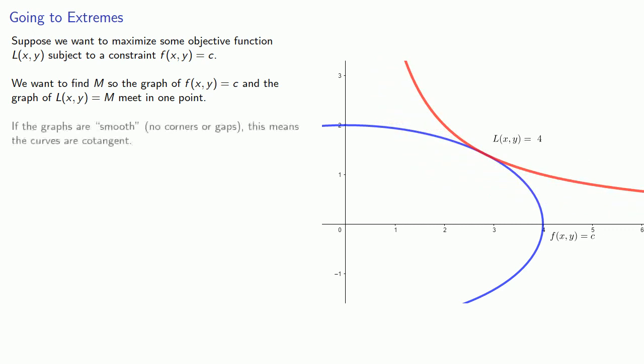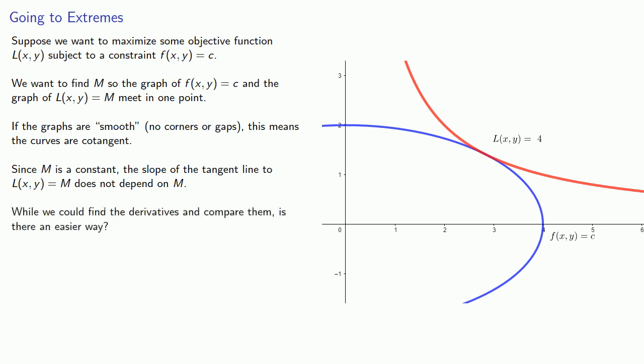If the graphs are smooth, which is to say they have no corners or gaps, this means that the curves are cotangent. Since m is a constant, the slope of the tangent line to L of xy equals m does not depend on m. And while we could find the derivatives and compare them, is there an easier way?